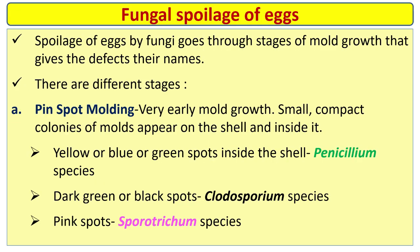Fungal spoilage of eggs goes through stages of mold growth giving defects named accordingly. Pin spot molding is very early mold growth; small compact colonies of molds appear on and inside the shell. Yellow or blue-green spots inside the shell are caused by Penicillium and Cladosporium species. Dark green or black spots are caused by Cladosporium species. Pink spots are caused by Sporotrichum.